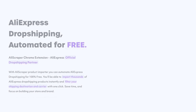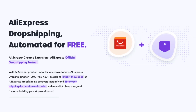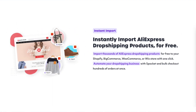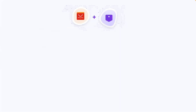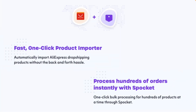Dropshipping with AliExpress has never been easier. With Spockit's free Chrome extension, AliScraper, you can automate your processes of importing products, inventory syncing, and order fulfillments with an unlimited number of AliExpress suppliers.